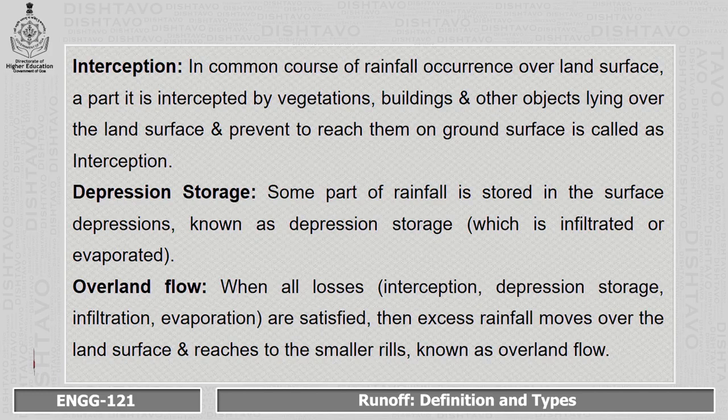Depression storage can be infiltrated into the ground or evaporated. Overland flow occurs when all losses — that is, interception, depression storage, infiltration, and evaporation — are satisfied. Then the excess rainfall moves over the land surface and that runoff reaches smaller rills, known as overland flow.